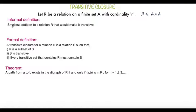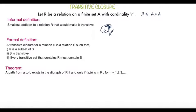The informal definition is: the smallest addition to a relation R that would make it transitive is the transitive closure. For example, if we have R, and we add some part to it, and the overall thing becomes R*, then if this is the smallest addition possible to make a transitive set, then R* is the transitive closure of R.